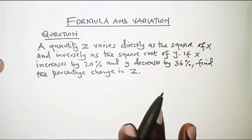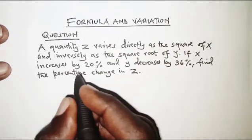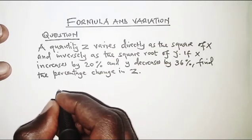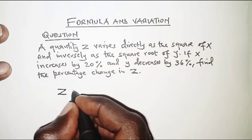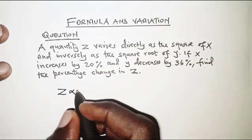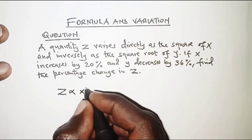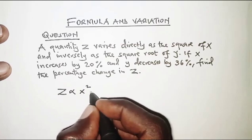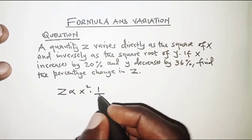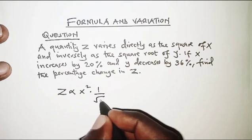So interpreting this, we are told that z varies as the square of x and inversely as the square root of y.